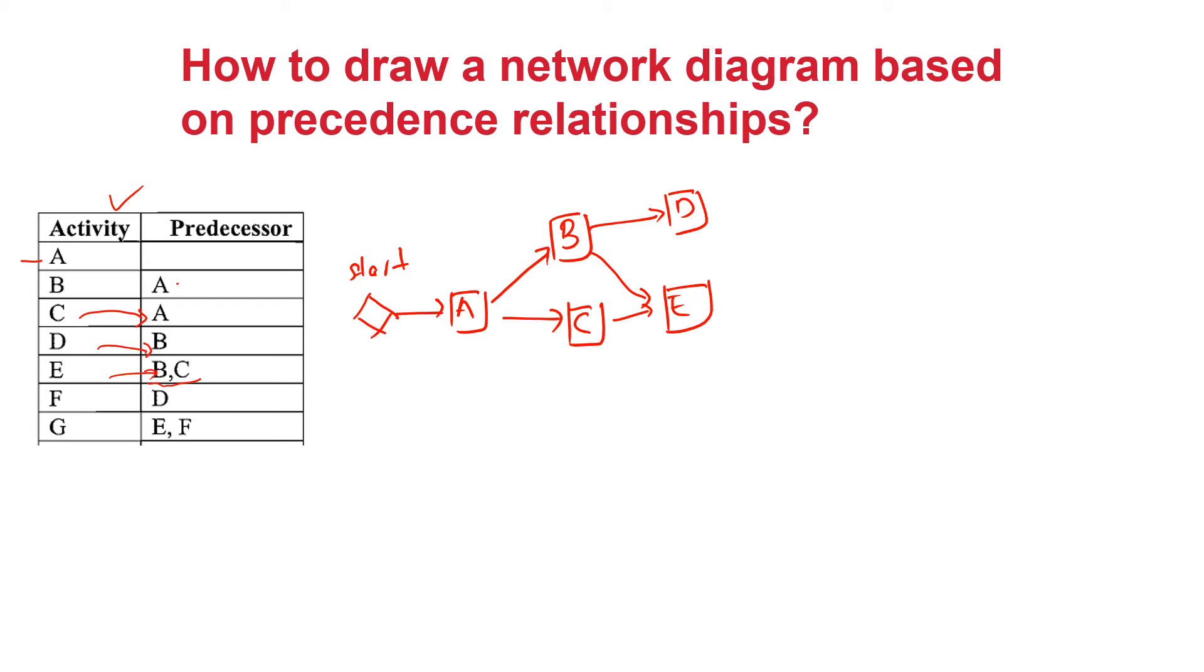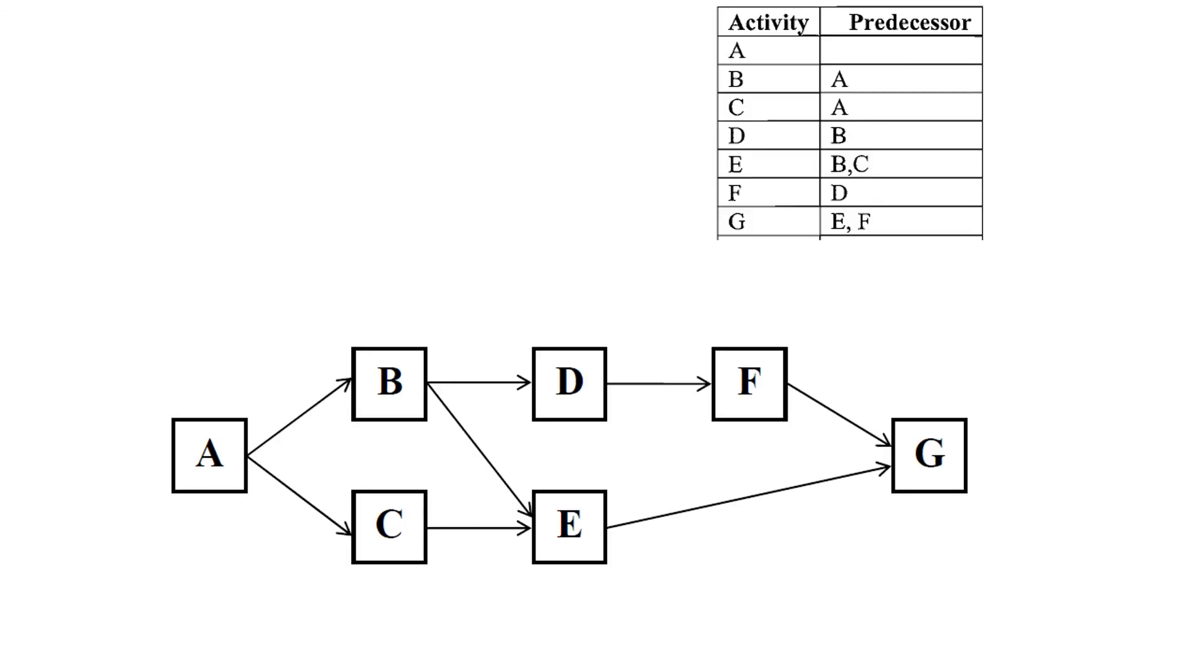And the second last is activity F which depends on completion of activity D, and activity G which is the last activity and dependent upon completion of activity D, E and F. So this completes the network diagram and if you want you could have a milestone activity towards the end indicating end of this project. So this is how your final solution may look like.